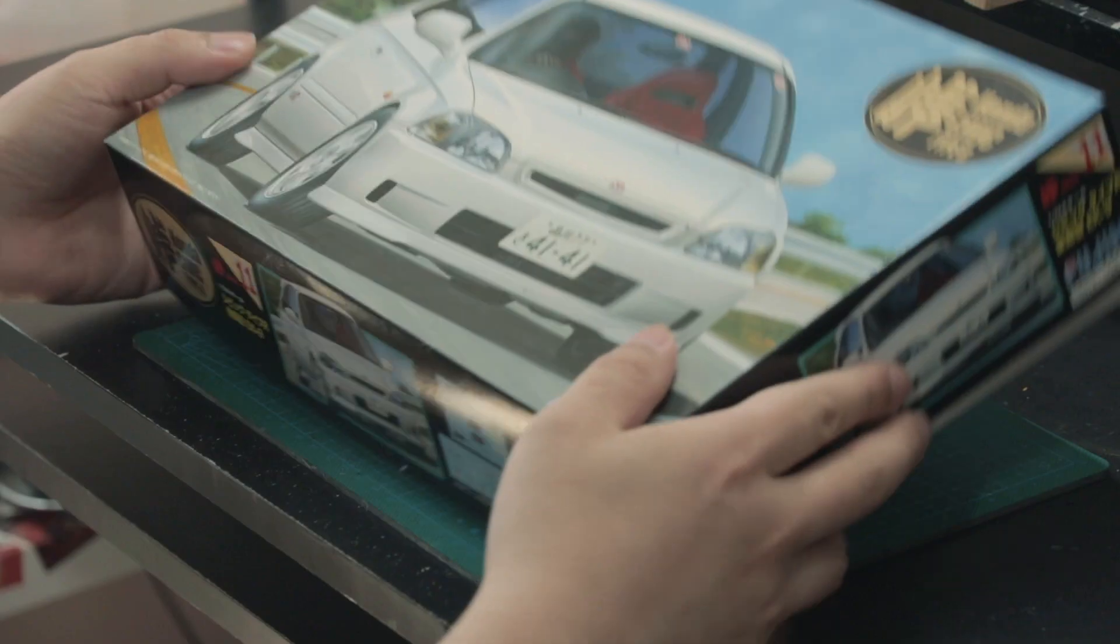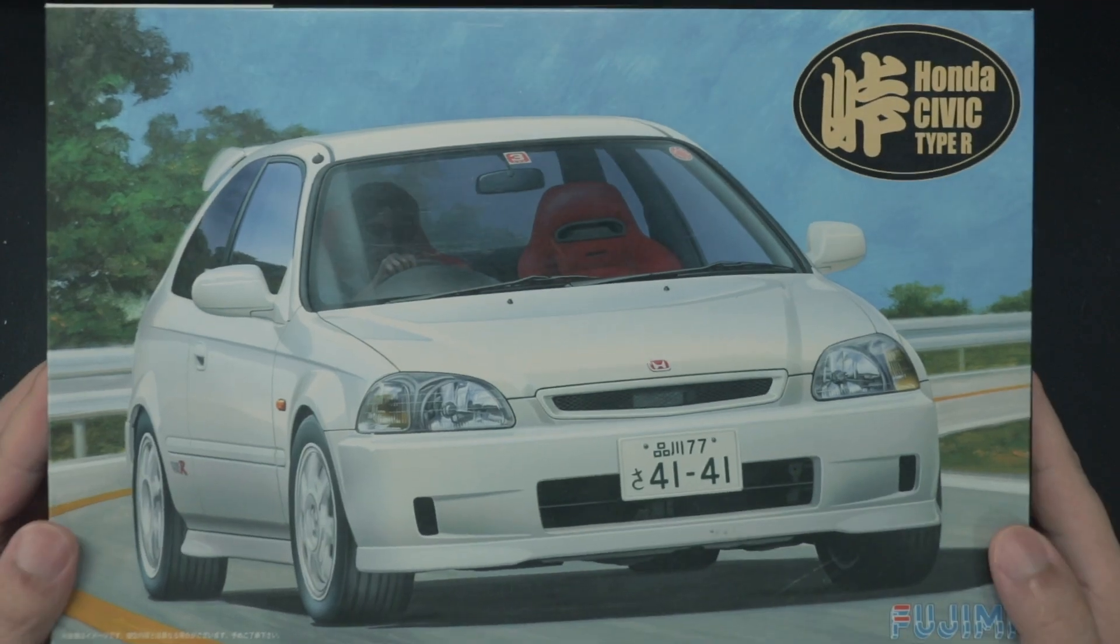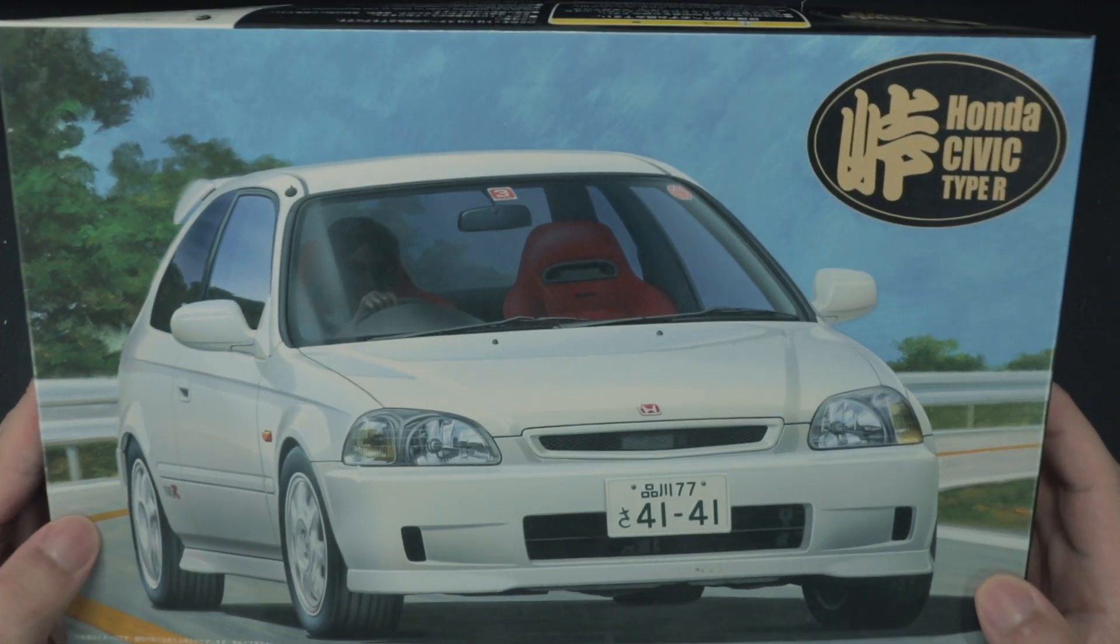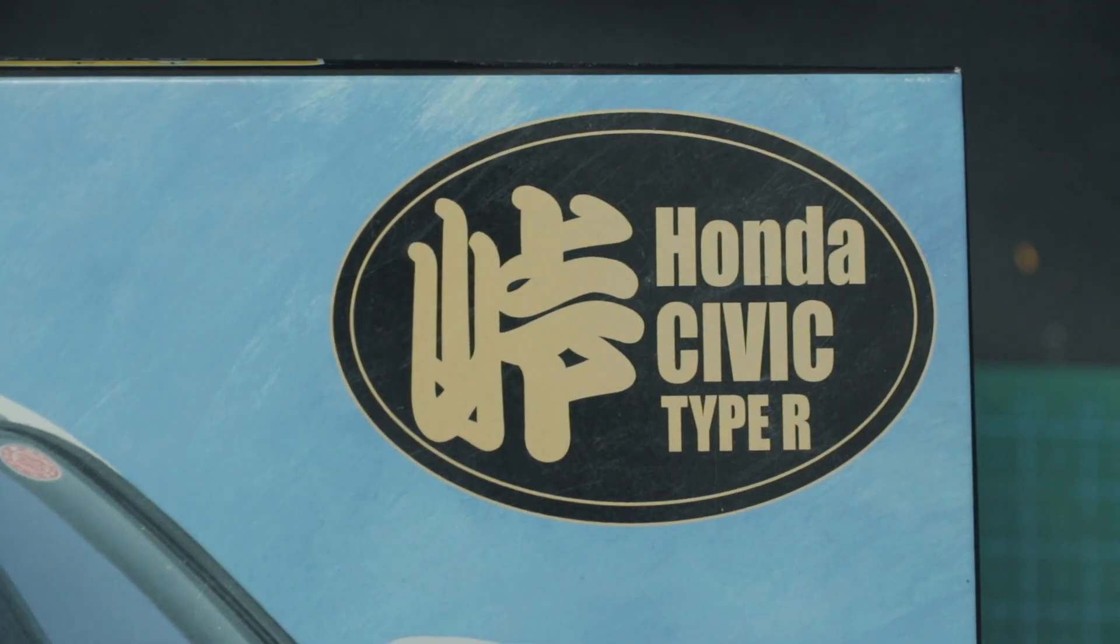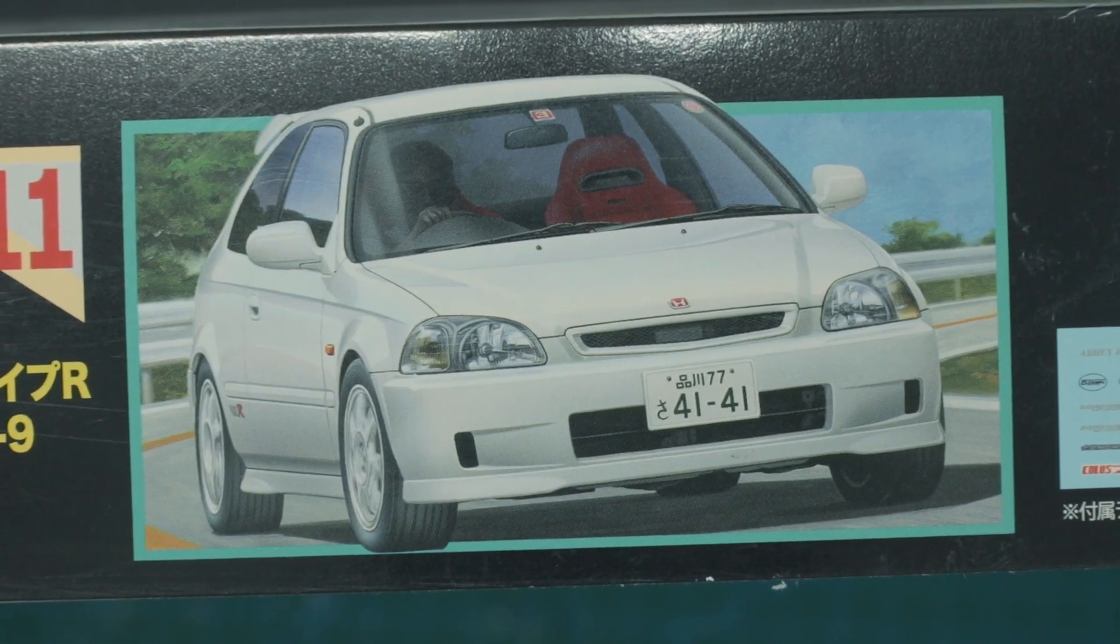Hey guys, welcome to Jun's mini garage. In today's video, I will be working on the 1:24 scale EK9 Civic Type R. This is part 1 where I'm going to be unboxing and preparing the parts for paint.